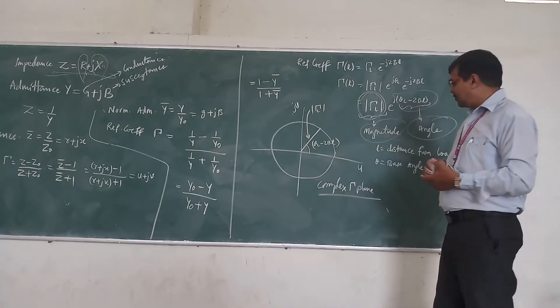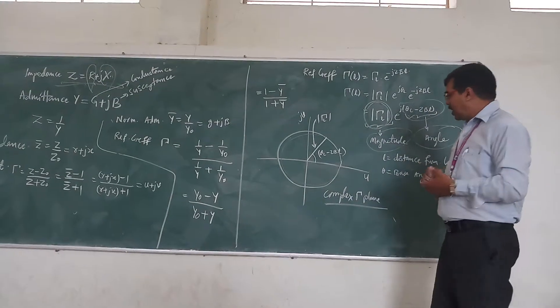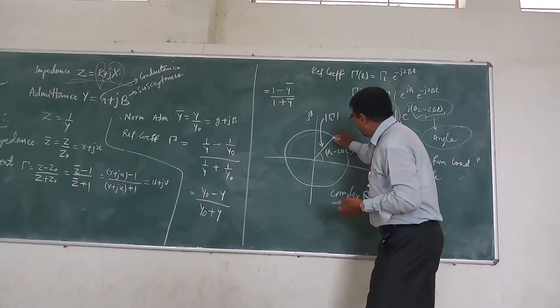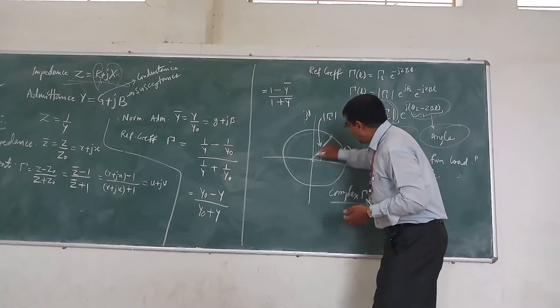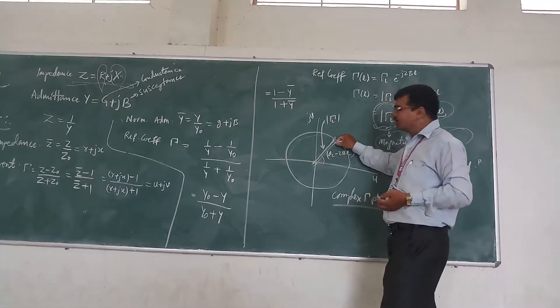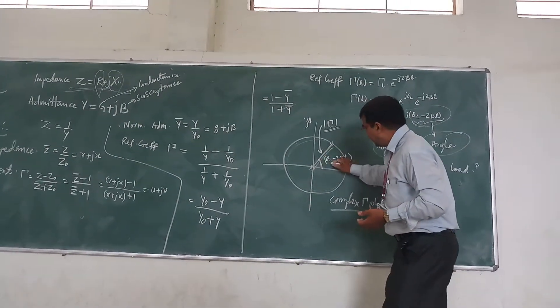When we represent it in the Smith chart, we have this complex gamma plane. And here, this is the point. From the center, this distance will be the magnitude.